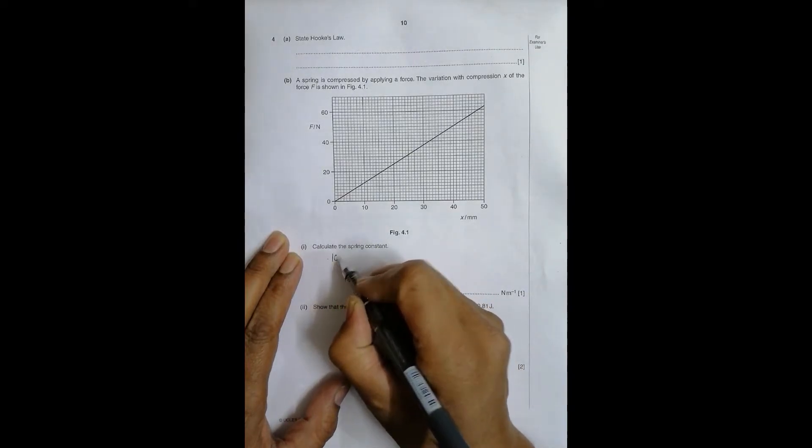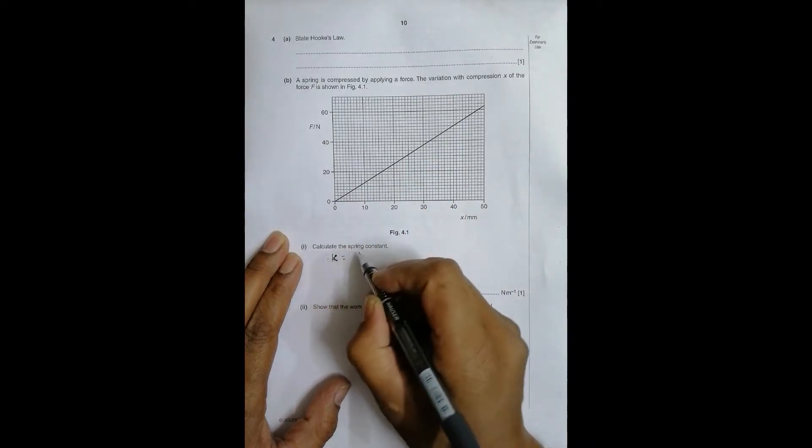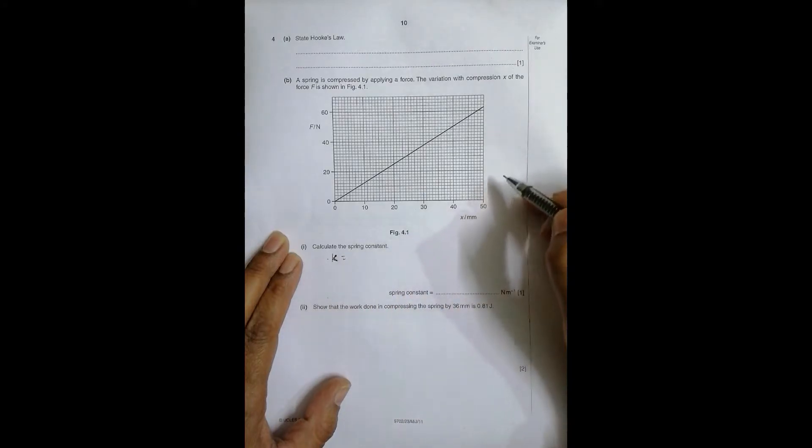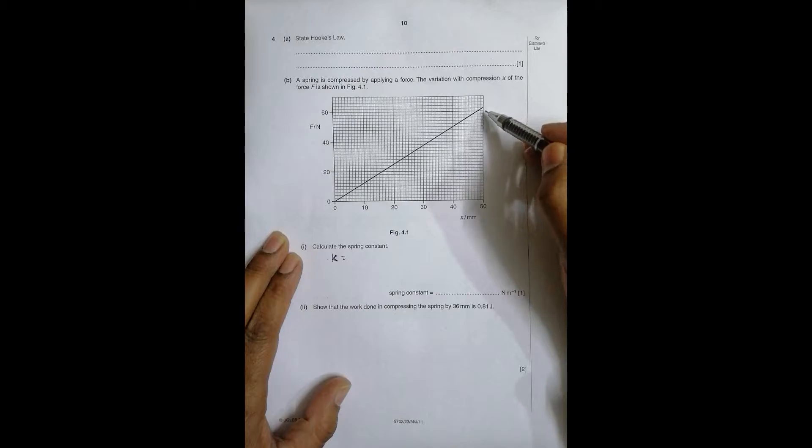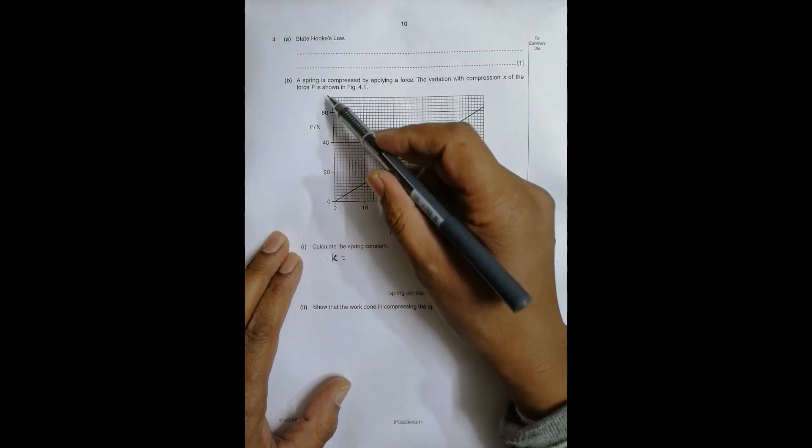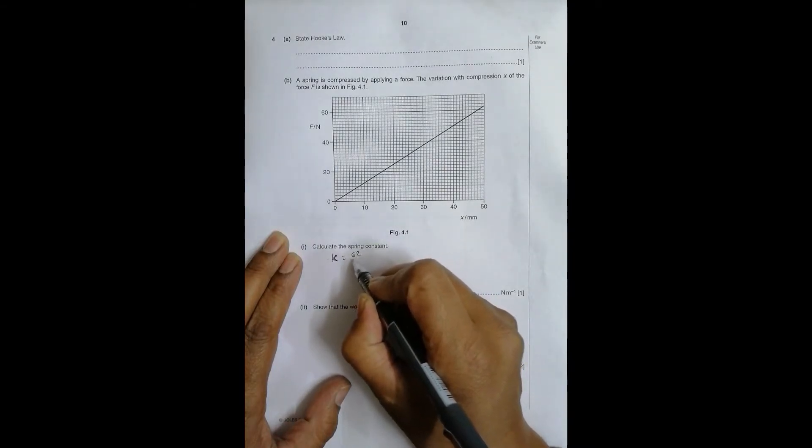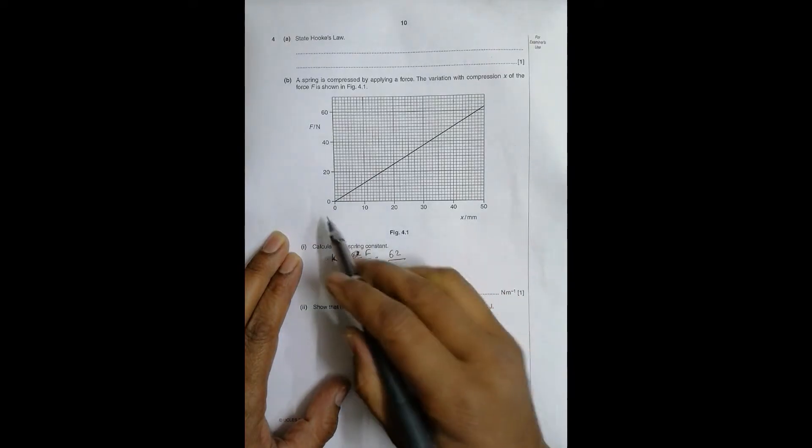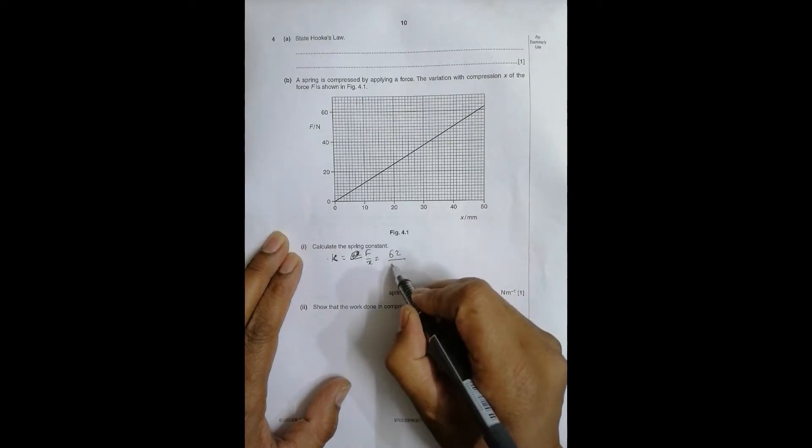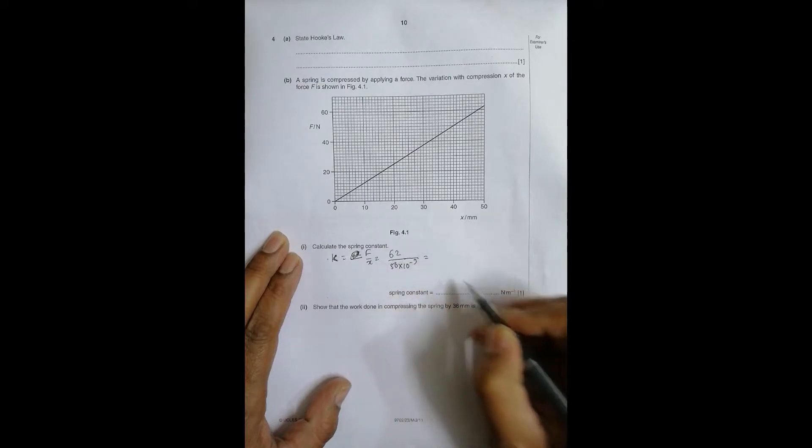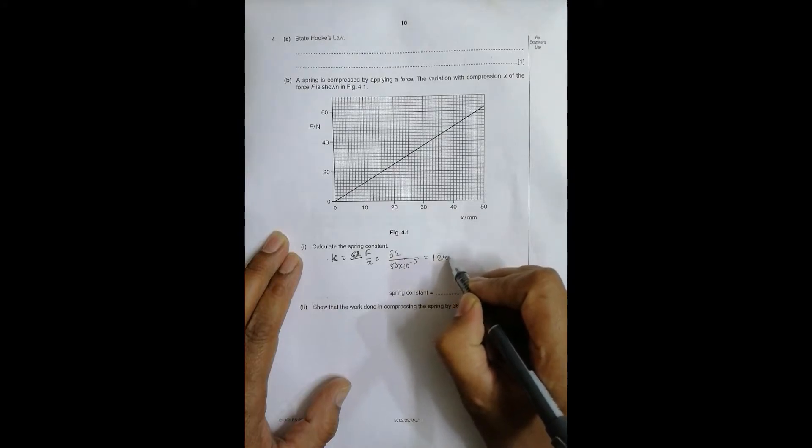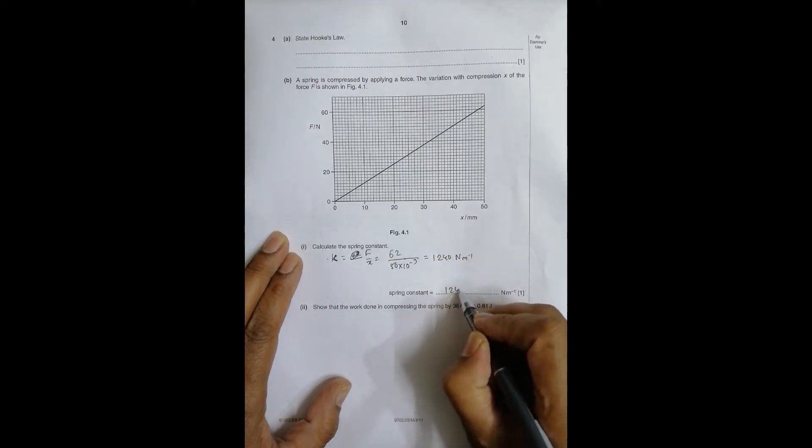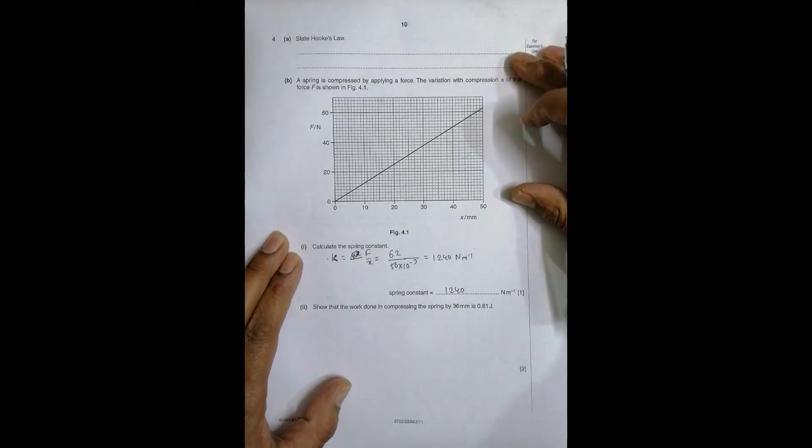So the spring constant K is equal to simply the slope of this thing, so that's equal to change in force by change in extension. The change is 62 force divided by X. X is 50 millimeters, so it's 50 into 10 to power minus 3 meters. It gives us 62 divided by 50 times 10^-3, so that becomes equal to 1240 Newton per meter.